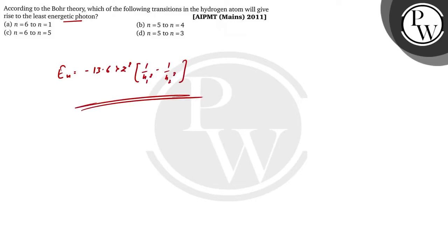What is clear? When you look at this, one thing I know is that this value is the same. My energy depends on (1 upon n1 squared minus 1 upon n2 squared).